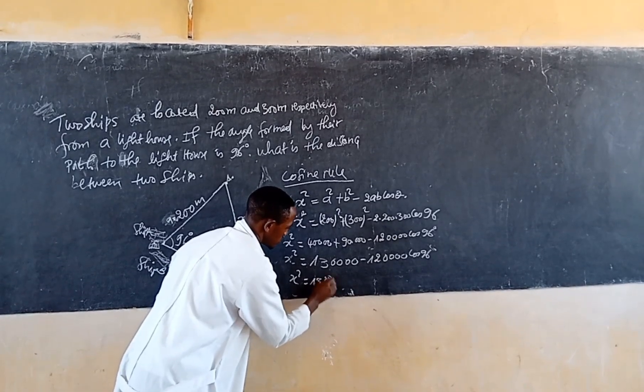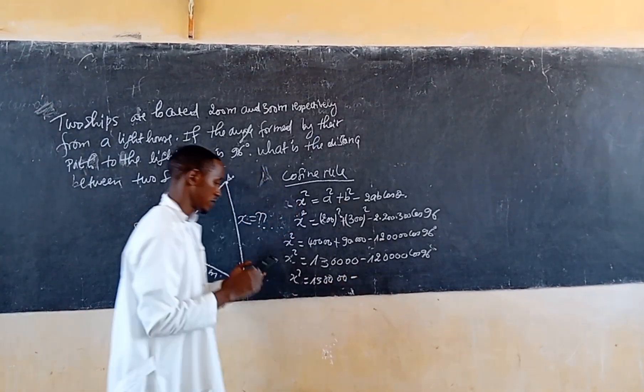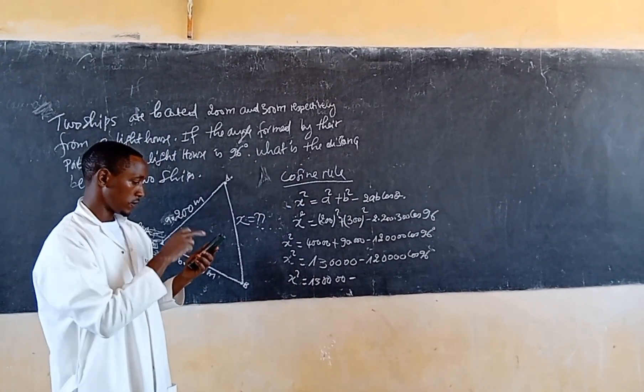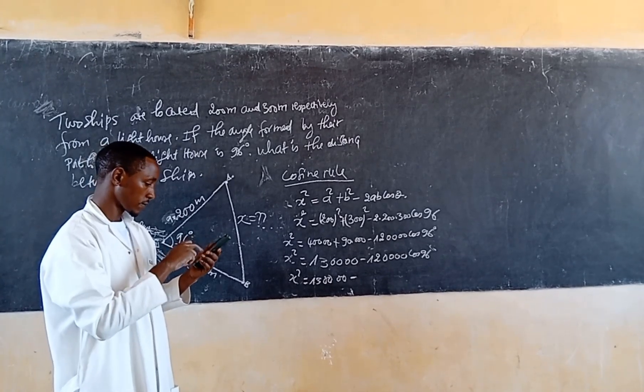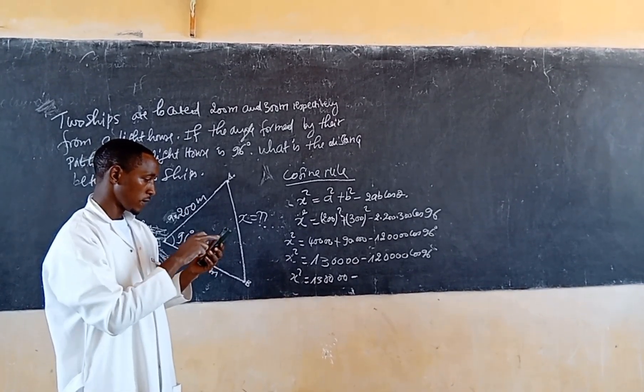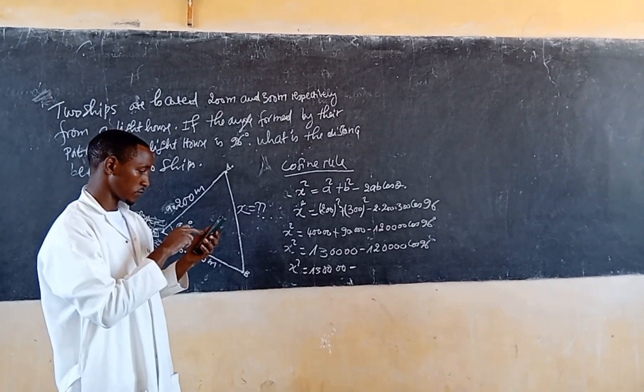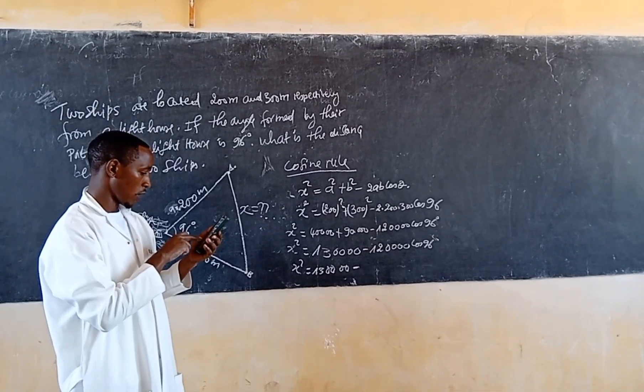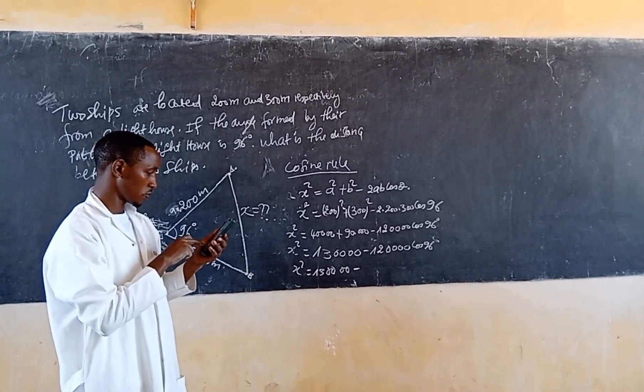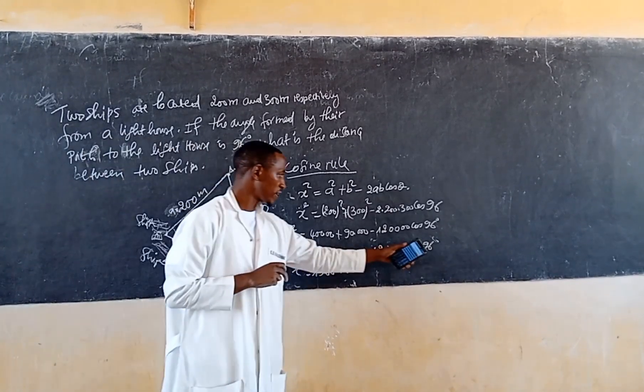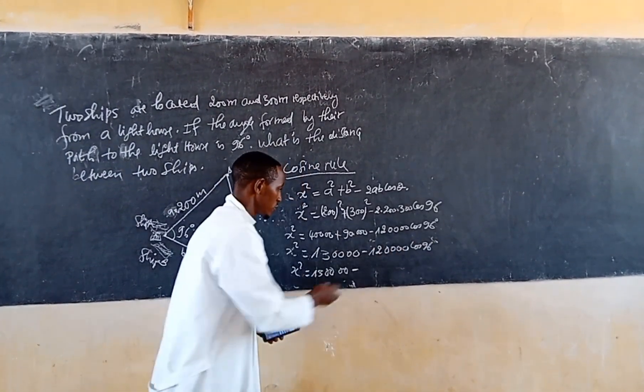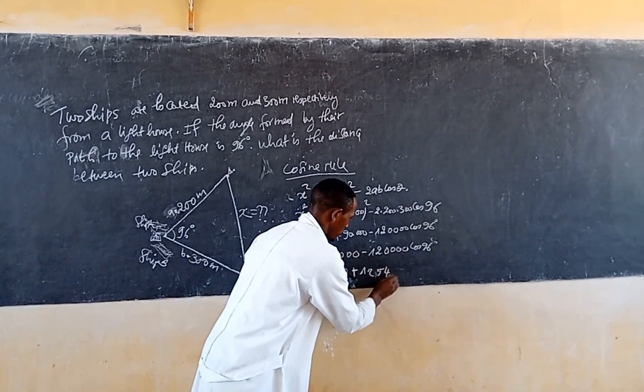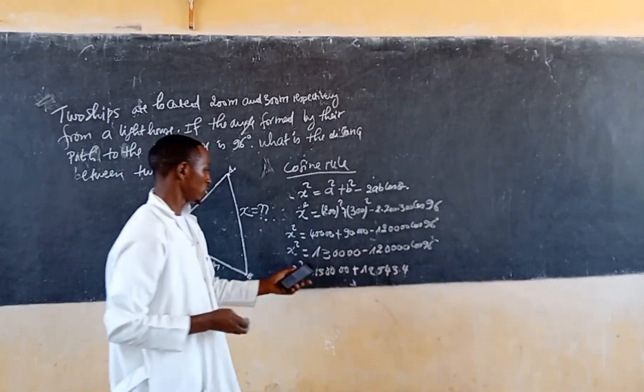130000 minus 120000 cosine of 96 degrees. So the cosine of the second quadrant is equal to negative, so that negative part becomes positive. 125424. Then we add this.